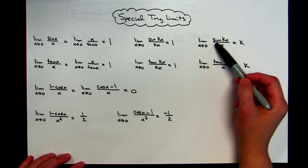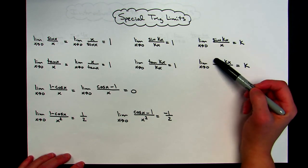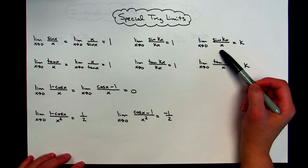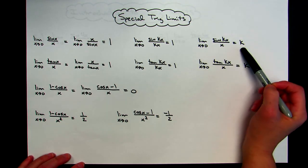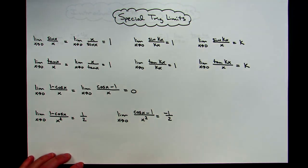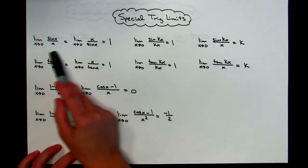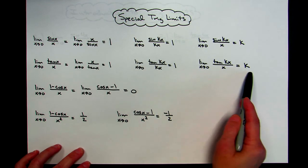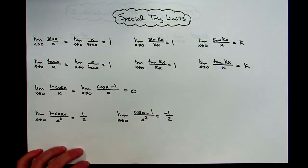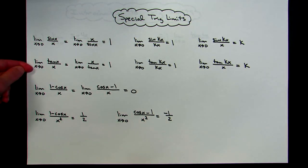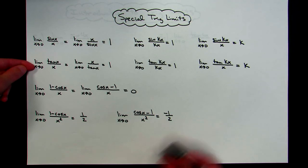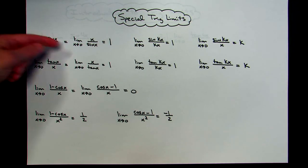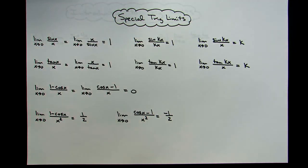The limit as x approaches 0 of sine kx over x — you can algebraically work this out. In the very first example I will do, we'll show you the correct steps for getting just the answer of k, whatever that coefficient is. Those properties apply to sine, and those exact same properties also apply to tangent. These are limits that are easily memorized, and since there's so much consistency between sine and tangent, there's no reason not to introduce those to you.